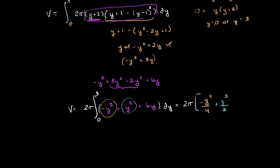And then finally, antiderivative of 6y is 3y squared. So plus 3y squared. And we are going to evaluate all of this business at 0 and 3.